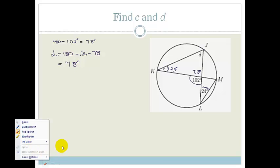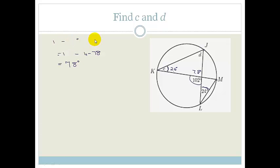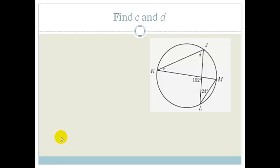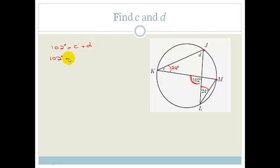I realized afterwards there was actually a much quicker and easier way to do this. The nice thing about geometry is there are quite a few ways that you can solve every problem. As long as you're following the rules of geometry, it doesn't matter which way you use. So I would first say this is 24 degrees, therefore that is 24 degrees — because they're both subtended by the points JM. This angle is the exterior angle to these two angles. Therefore 102 degrees equals C plus D. But C is 24 degrees, so 102 equals 24 plus D, therefore D equals 78 degrees again.